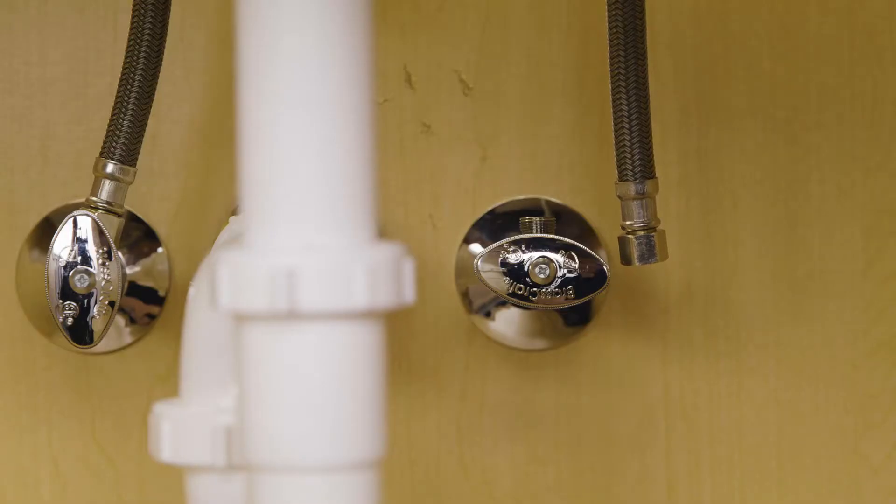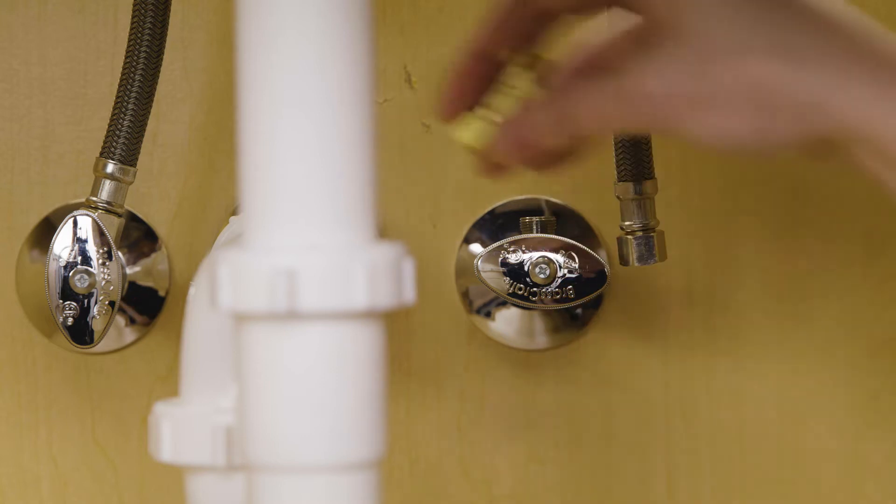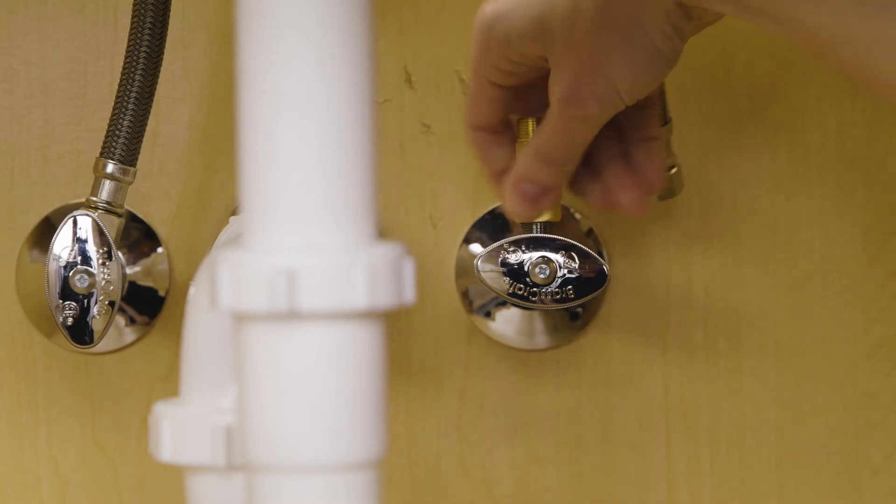Disconnect cold water line from the threaded stem on the cold water shutoff valve. Attach threaded ends of the supplied brass tee to the cold water supply line.